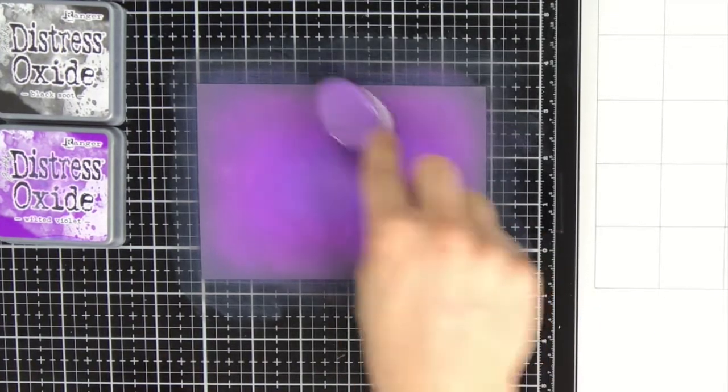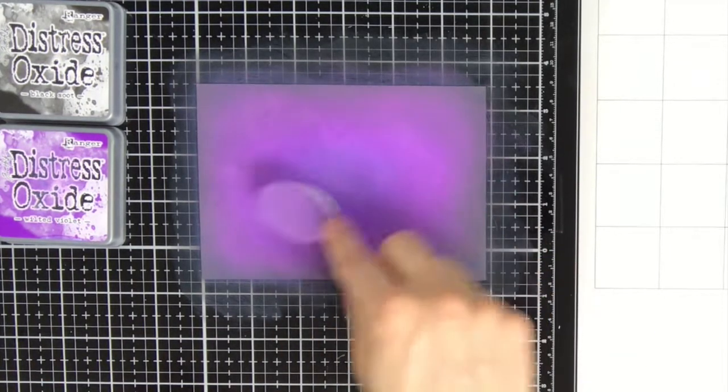And when I'm going towards that centre, I make sure that I do not apply too much of the wilted violet in the centre of that paper, but I really stick to that shaded lilac to keep it light.